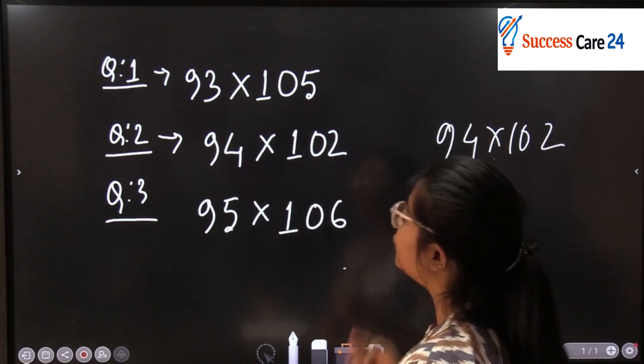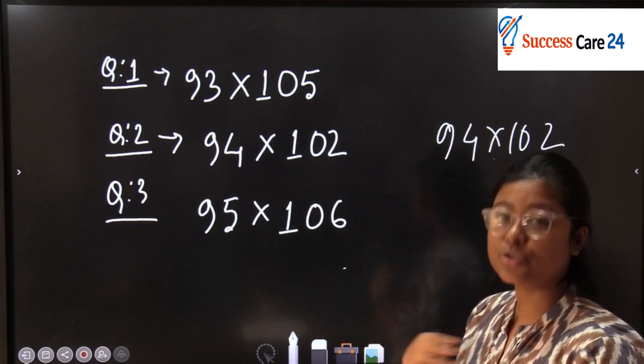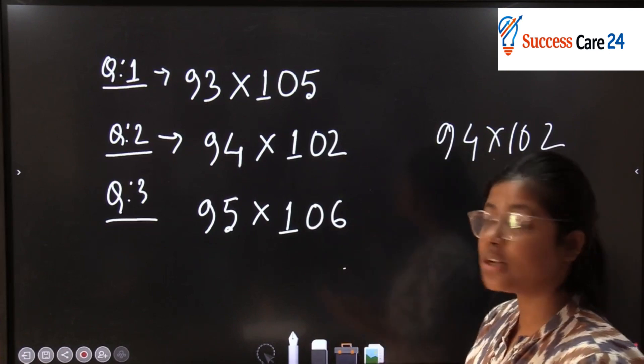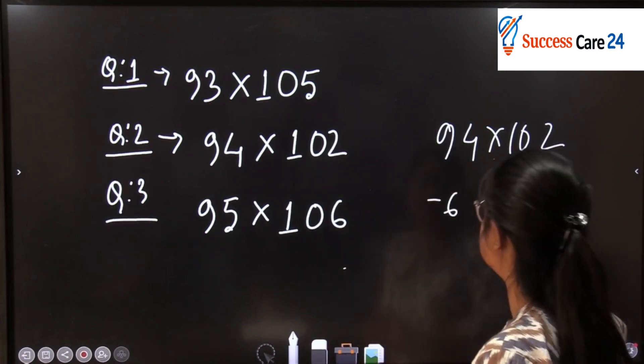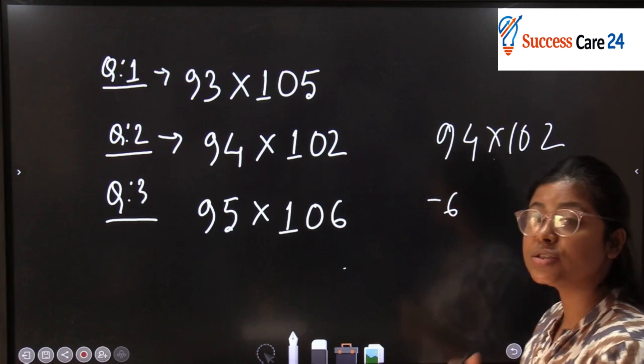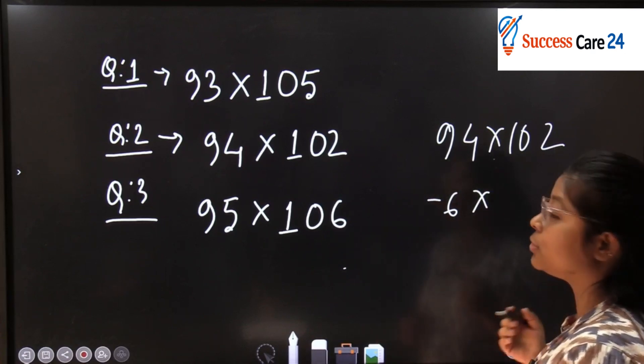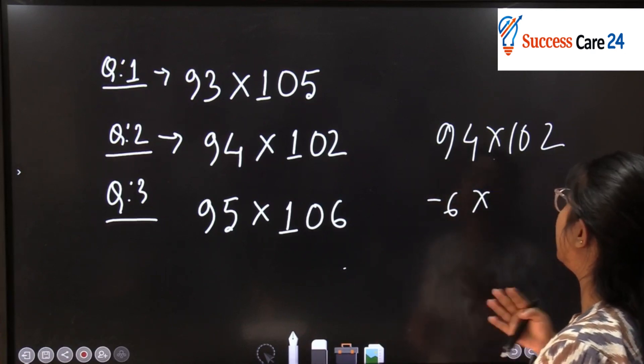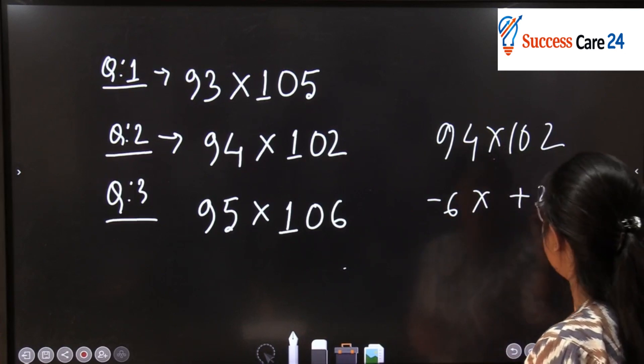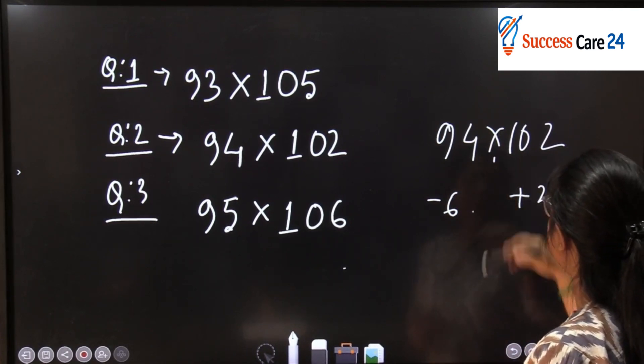What will we do? First we will see how much less or more is 94 from 100. 94 is 6 less than 100, so minus 6. And 102 is 2 more than 100, so plus 2.